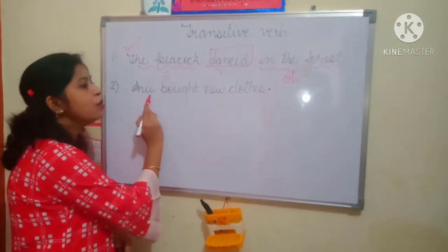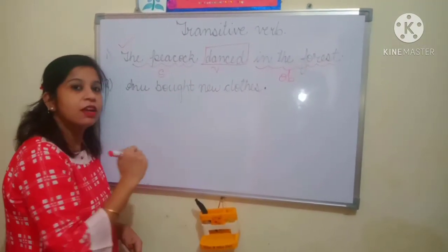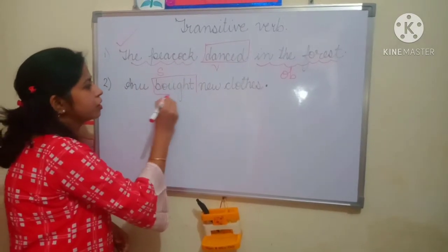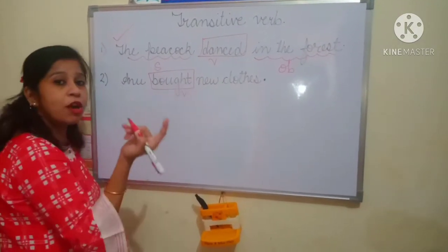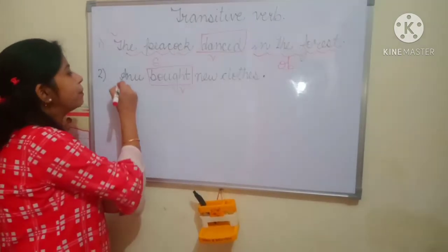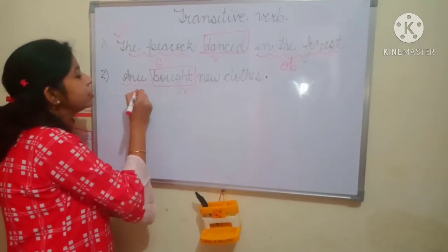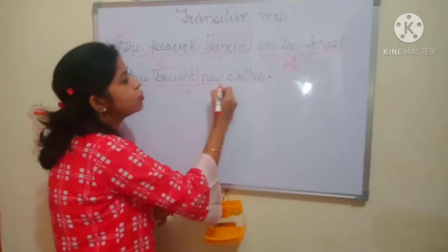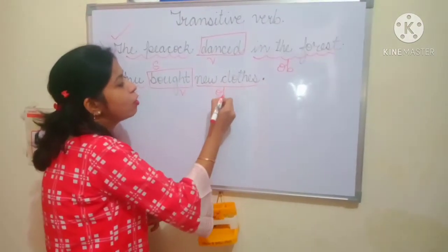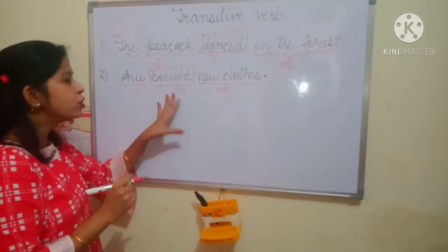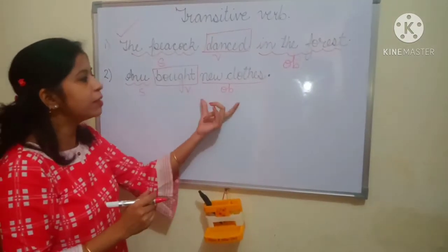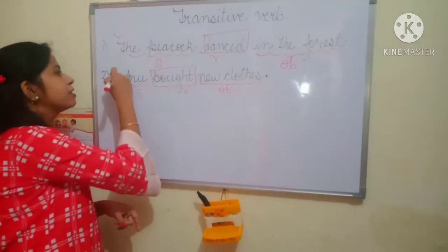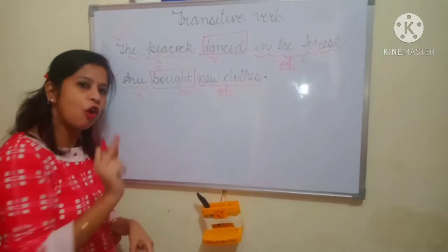Second example: Anu bought new clothes. Which is the verb performed in the given sentence? Bought. And who bought? Subject is Anu. And what did she buy? New clothes — new clothes worked as an object here. So this verb is also having subject bhi hai, object bhi hai. So the verb is transitive verb because it has subject as well as object.